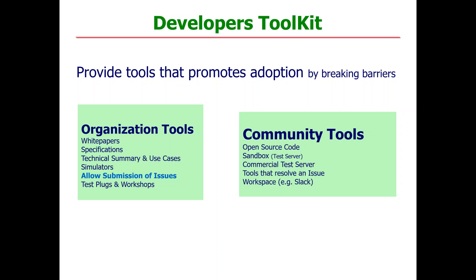On the community side, they organize to create open source code. In our case, one open source community took our specifications and developed code. They create sandboxes for constant ongoing testing of what they're developing. Some organizations make a server available for testing. They develop tools to resolve particular issues and have workspaces to discuss problems related to what they're implementing. Most of these issues are not related to the SDO, but some are — and those you have to pick up and take back into the organization.